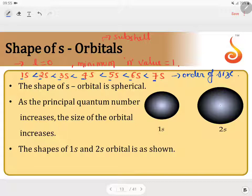From the diagram, it's very clear that 2s, the size will be greater when you compare to 1s subshell or 1s orbital.